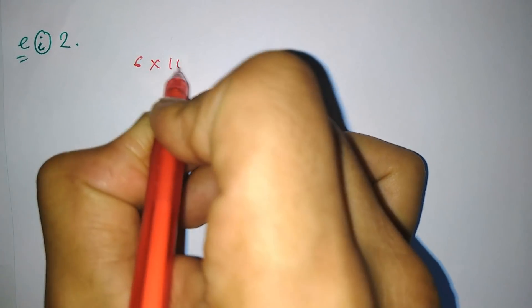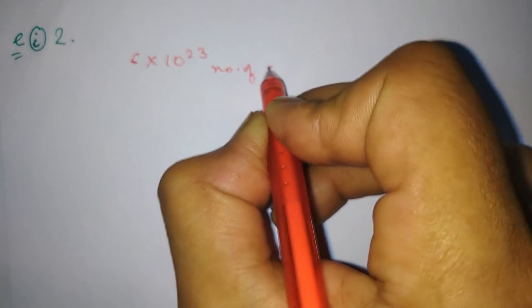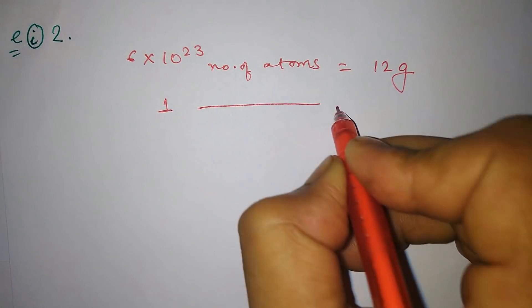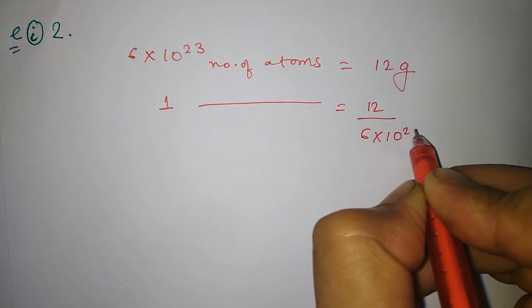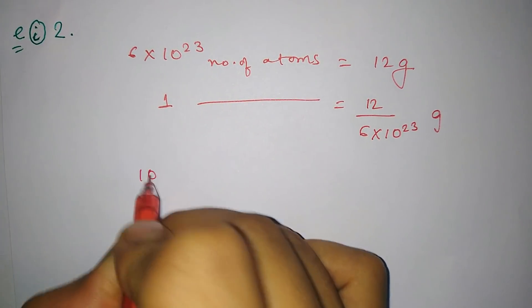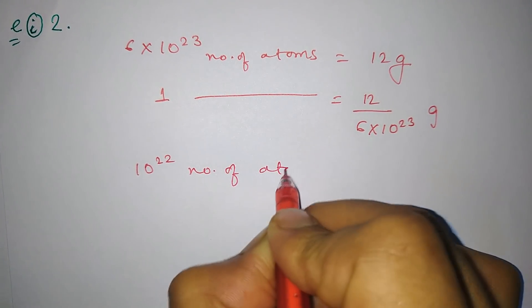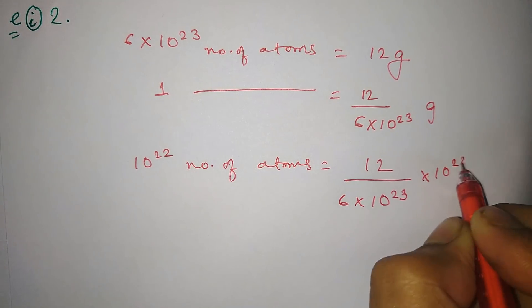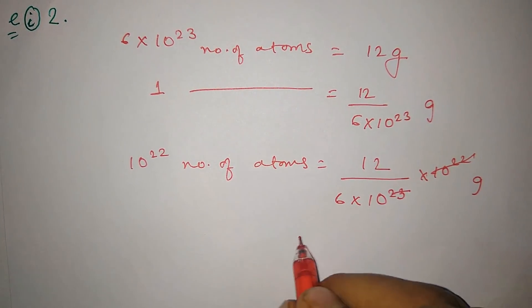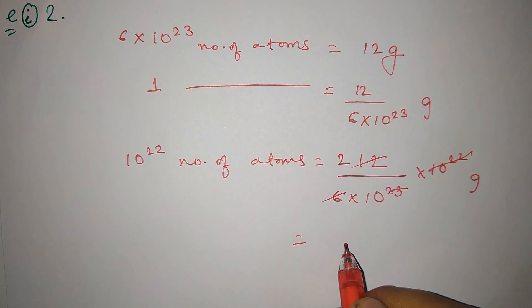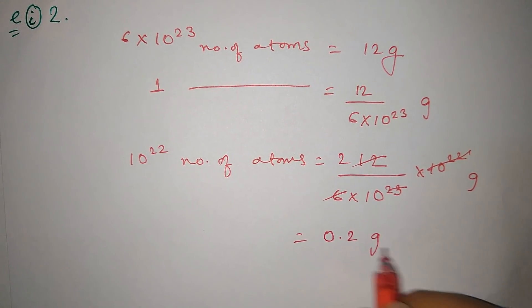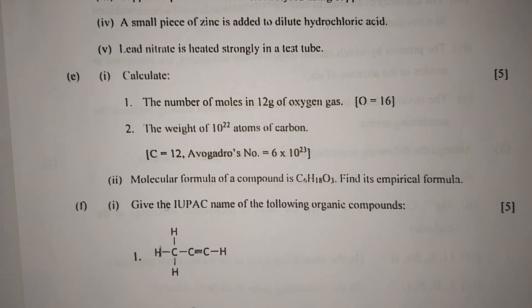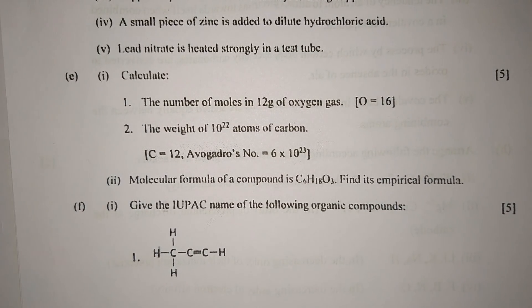Part two: The weight of 10 to the power 22 atoms of carbon. We know 6 times 10 to the power 23 number of atoms of carbon equals 12 grams. So one atom will weigh 12 by 6 times 10 to the power 23 grams. And 10 to the power 22 number of atoms will weigh 12 upon 6 times 10 to the power 23 times 10 to the power 22 grams. This will cancel out, 6 by 10 means 1/5, that equals 0.2 grams.